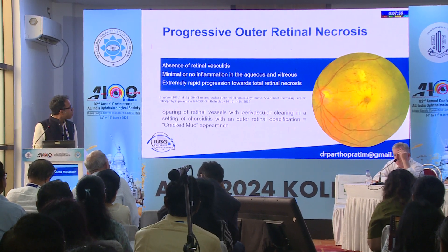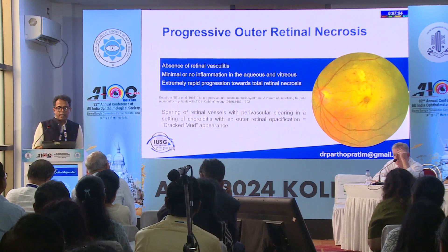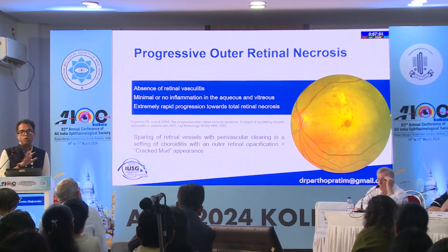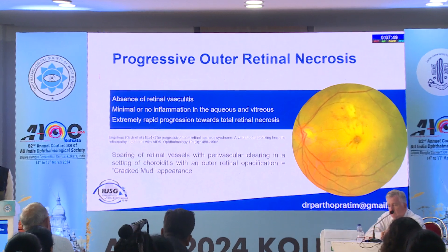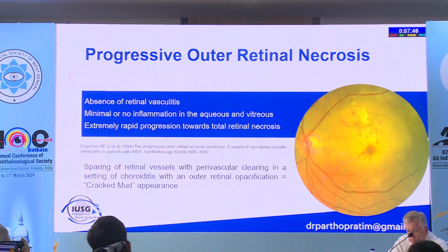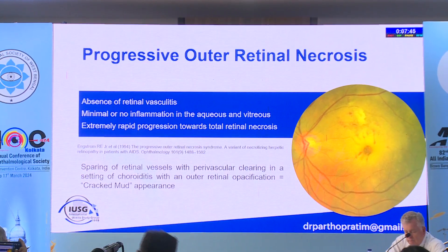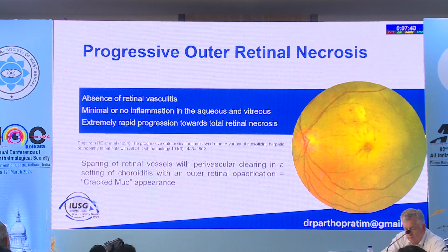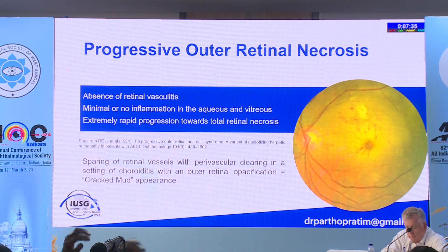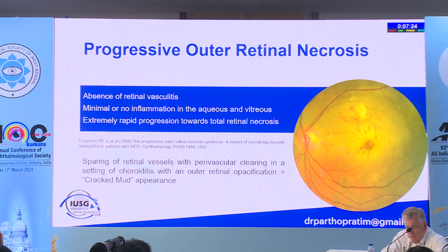Another posterior viral retinitis entity is Progressive Outer Retinal Necrosis (PORN). It is characterized by the absence of retinal vasculitis, minimal or very little vitritis, and it progresses in the reverse way of ARN — starting from the posterior pole and then involving the periphery.